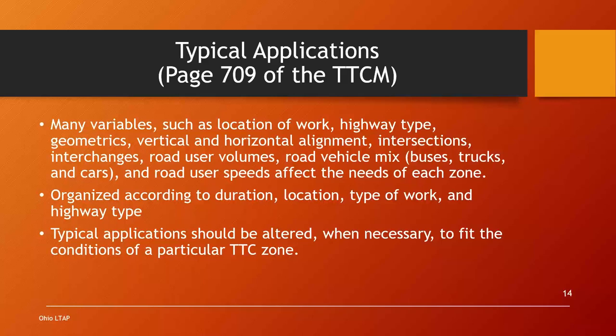The geometrics of your roadways vary widely — you might be working in southeastern Ohio on a two-lane rural road with lots of curves and hills, or on a totally straight, level road in northwest Ohio. You might be working at an intersection or an interchange. More variables include traffic volumes — low volume or high volume — whether you're on an arterial road that carries commercial traffic, and of course the speed limit, which differs for each roadway.